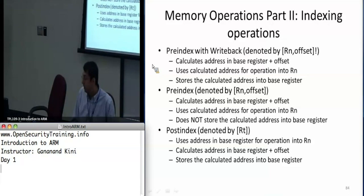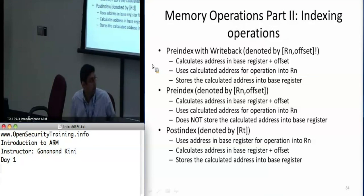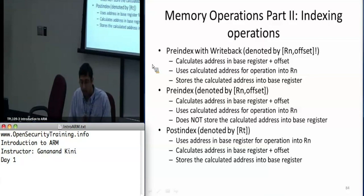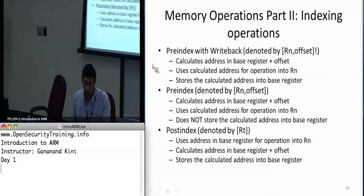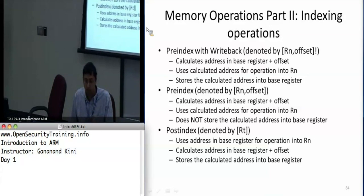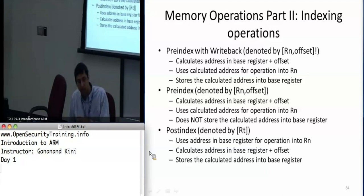Similarly, there's something called post-indexing. It calculates the address again followed by an offset, but the offset is specified outside the square brackets. It stores the calculated address back similarly to pre-index with writeback. The only difference is the offset is put outside and there is no exclamation point.